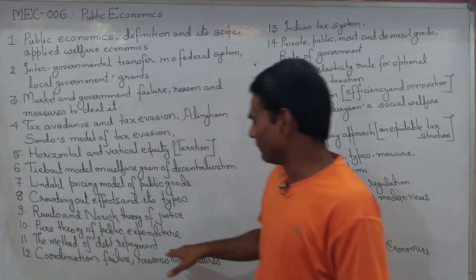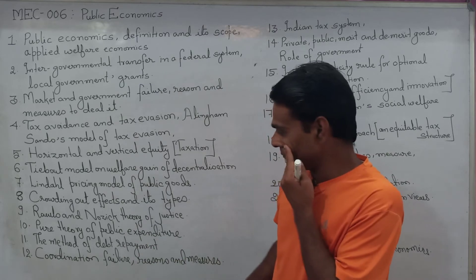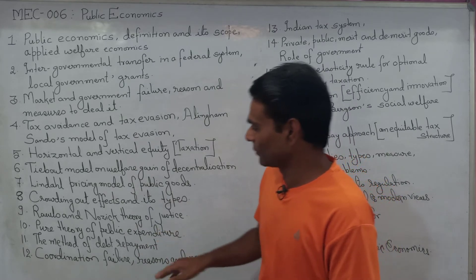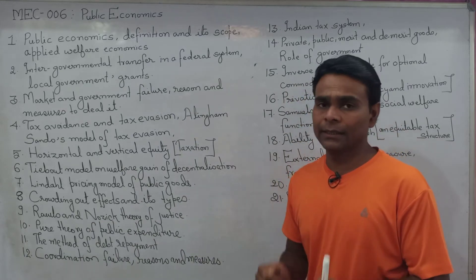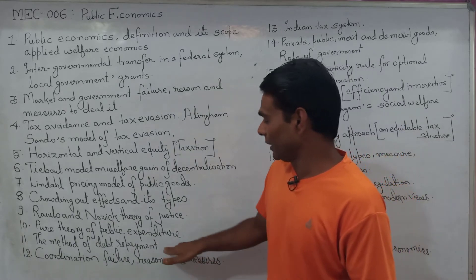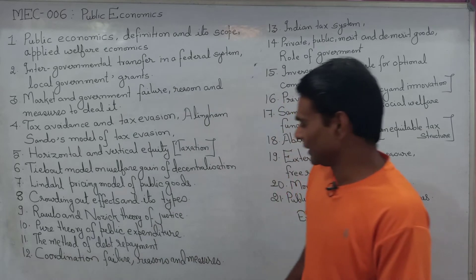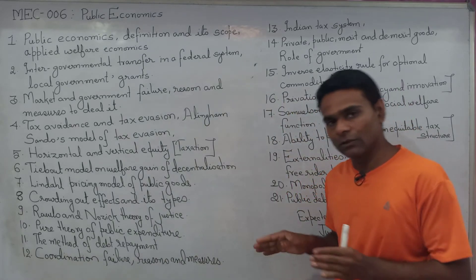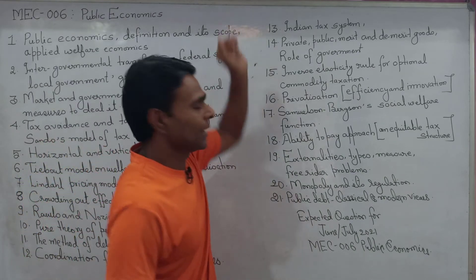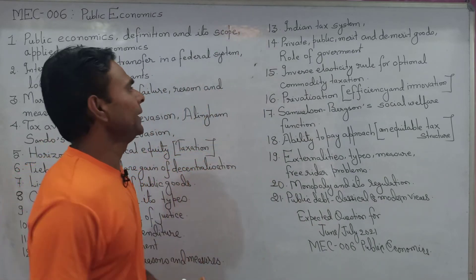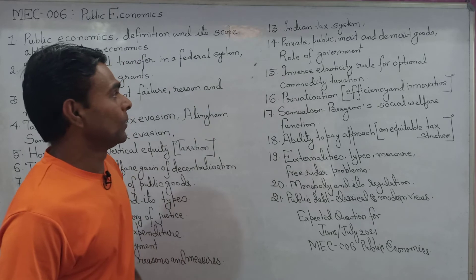Pure theory of public expenditure is a major VVI topic and a main part of the preparation. The method of public debt repayment is also a major VVI topic. Coordination failure and its reasons and measures is also a very important question. Next, the major characteristics of the Indian tax system should be prepared very well.